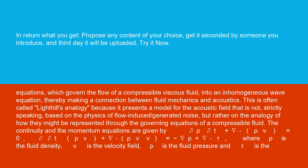The continuity and the momentum equations are given by ∂ρ/∂t + ∇·(ρv) = 0, ∂(ρv)/∂t + ∇·(ρvv) = -∇p + ∇·τ